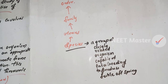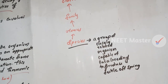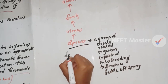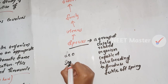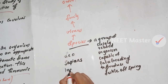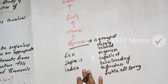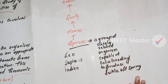Examples of species include Mangifera indica (mango), Solanum tuberosum (potato), and Panthera leo (lion). Indica, tuberosum, and leo are the species names. Interbreeding within a species produces fertile offspring.